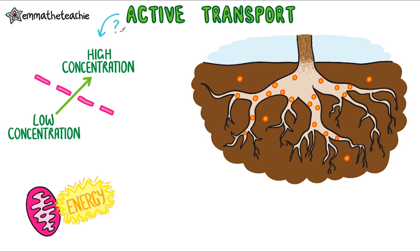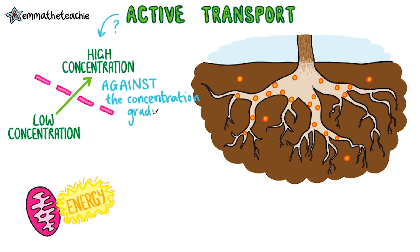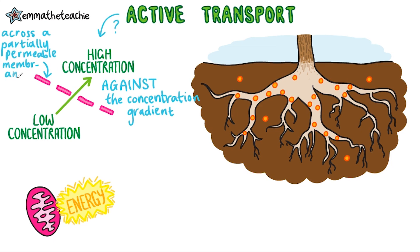Hopefully you've spotted that this time round the arrow is reversed, so substances are moving from where they are in a low concentration to where they are in a high concentration — against the concentration gradient. You might also have spotted that this movement is taking place across a partially permeable membrane, just like osmosis.